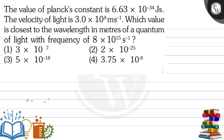Let's read the question. The value of Planck's constant is 6.63 multiplied by 10 to the power minus 34 joule-seconds. The velocity of light is 3.0 multiplied by 10 to the power 8 meters per second. Which value is closest to the wavelength in meters of a quantum of light with a frequency of 8 multiplied by 10 to the power 15 per second?